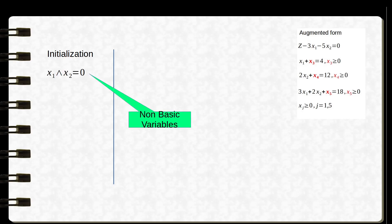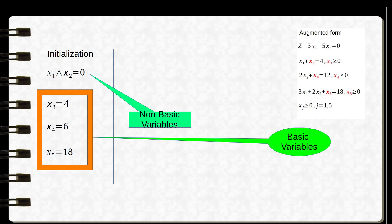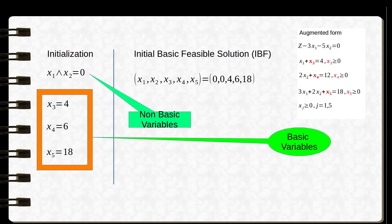What do we get now? When we take x1 and x2 as 0, they are known as the non-basic variables. Using the augmented form on the right, we can calculate x3, x4, and x5, which are known as the basic variables. We get the initial basic feasible solution: x1=0, x2=0, x3=4, x4=6, x5=18. We then calculate z, which equals 0.